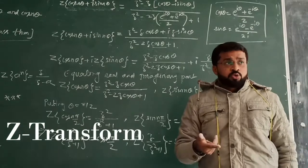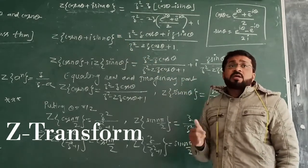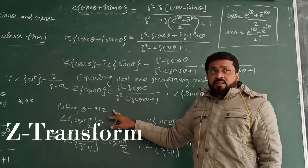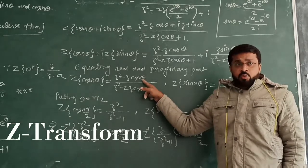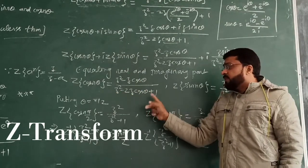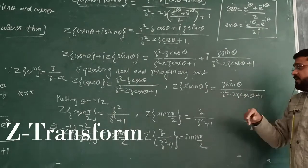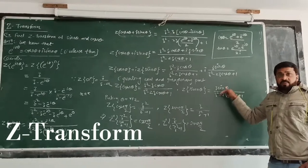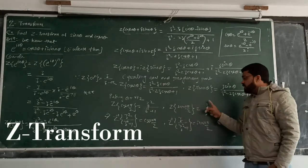These formulas you have to remember because we have to use them. Now let's apply this. We have to find the Z-transformation of sin(nπ/2) and cos(nπ/2). We put θ = π/2 in the formula. Since cos(π/2) = 0, what is left is Z squared upon (Z squared plus 1). So Z-transformation of cos(nπ/2) is Z squared upon (Z squared plus 1). Similarly, sin(π/2) = 1 and cos(π/2) = 0, so Z-transformation of sin(nπ/2) is Z upon (Z squared plus 1).